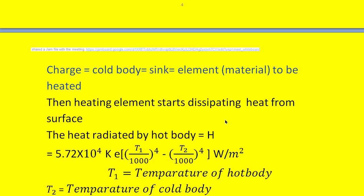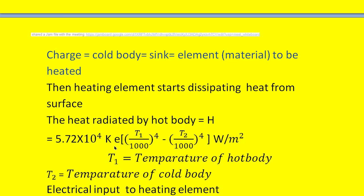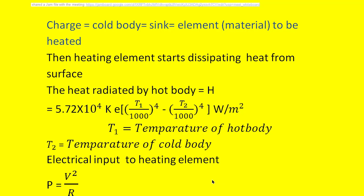There is a formula for heat dissipated from a steady-temperature hot body, given by Stefan's radiation of heat: H = 5.72 × 10⁴ × K × E × [(T1/1000)⁴ − (T2/1000)⁴] watts per meter square. Here K is the radiation efficiency, E is the emissivity of the material of the heating element, T1 is the temperature of the hot body, and T2 is the temperature of the cold body.